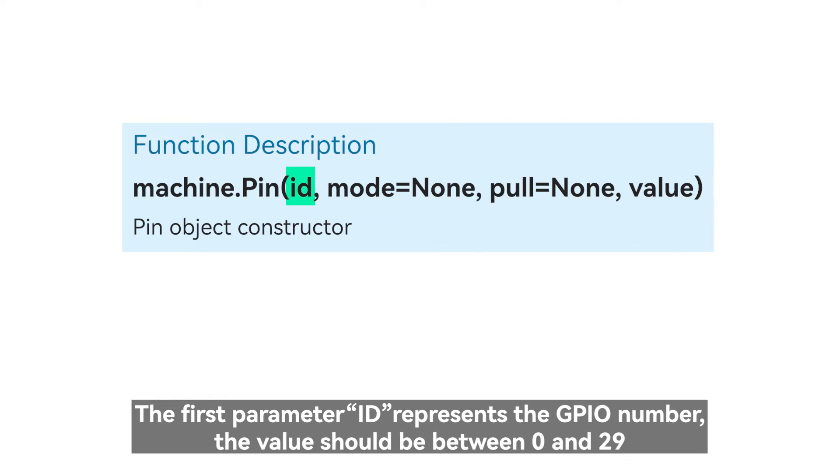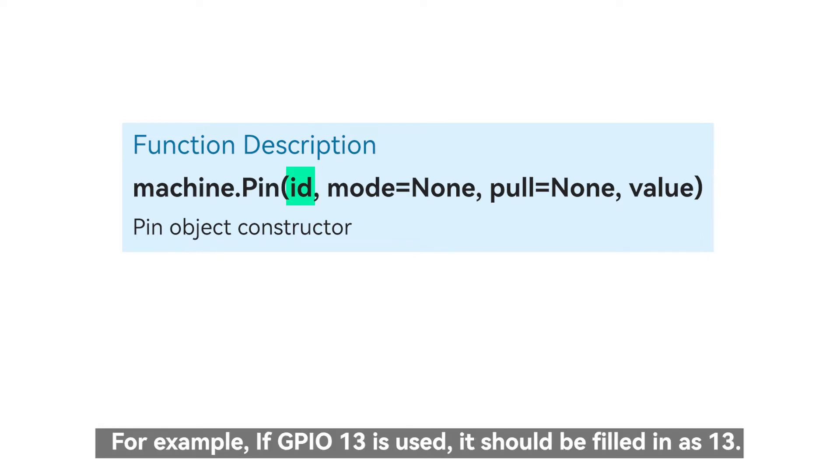The first parameter ID represents the GPIO number, the value should be between 0 and 29. For example, if GPIO 13 is used, it should be filled in as 13.